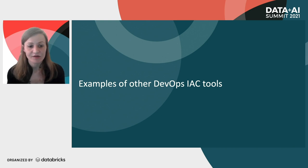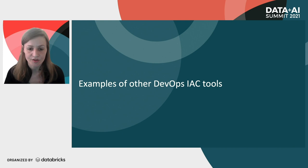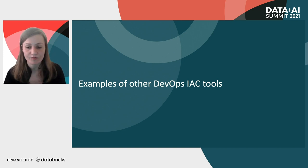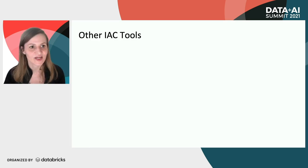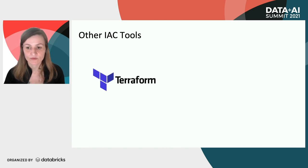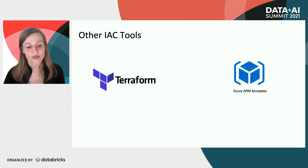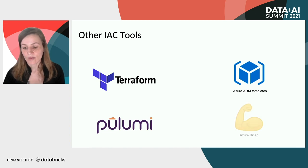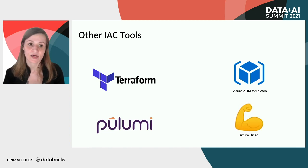Now we're going to look at examples of other DevOps and infrastructure as code tools. What else can we use other than Azure DevOps and the REST API with Python? Other IaC tools include Terraform, Azure ARM templates, Pulumi, Azure Bicep, and many more.